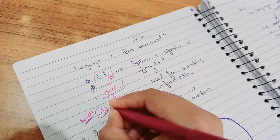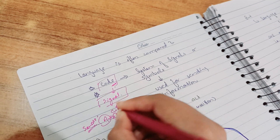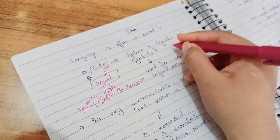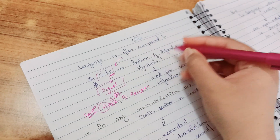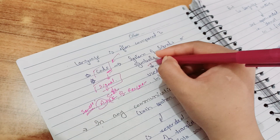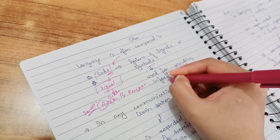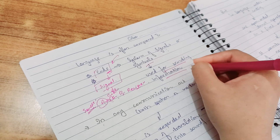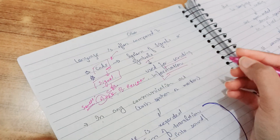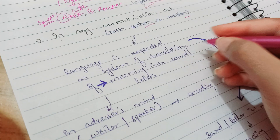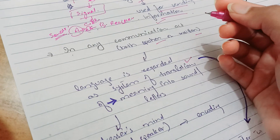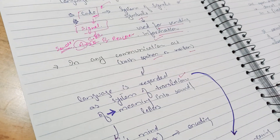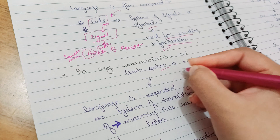Moving forward, language is often compared to a code — a system of signals or symbols used for sending information in any communication act, whether written or spoken.